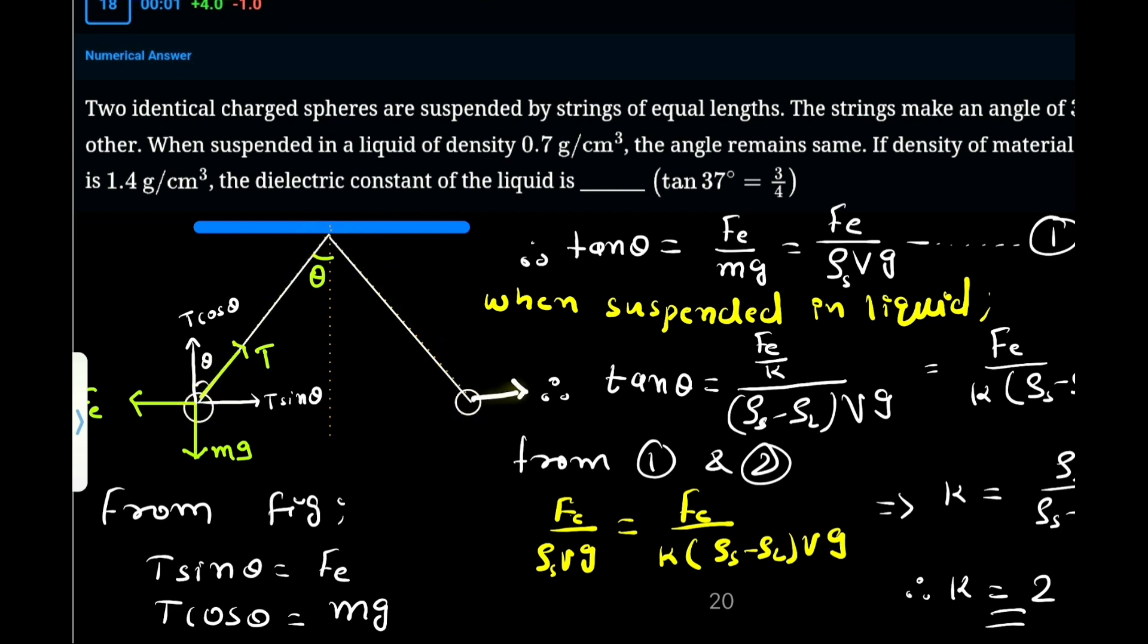On repelling, they are trying to go away from each other, but the gravitational force pulls them downward and this tension pulls them upward. This sphere finds equilibrium at this position by making an angle theta with the vertical.